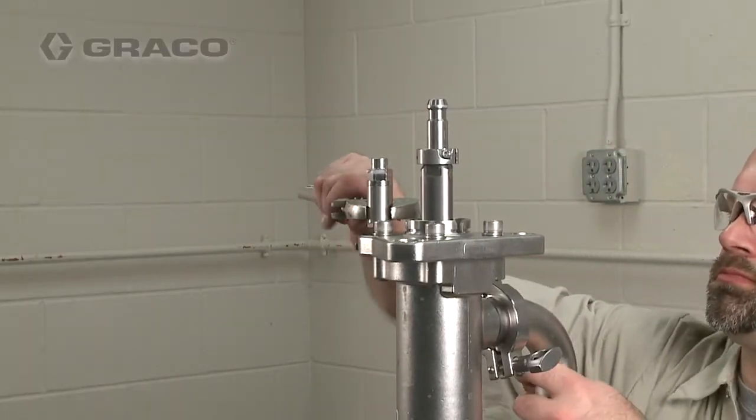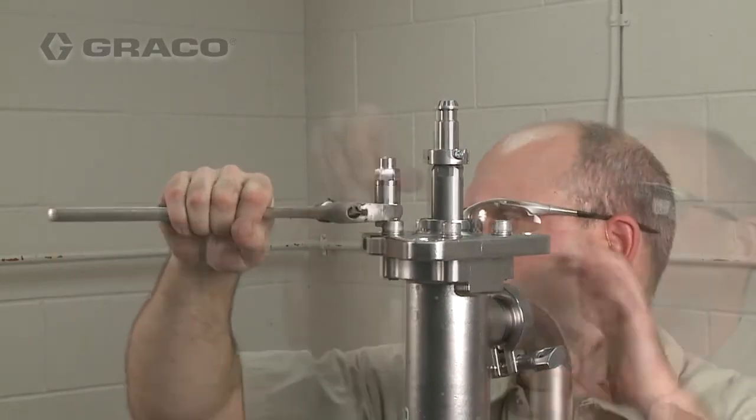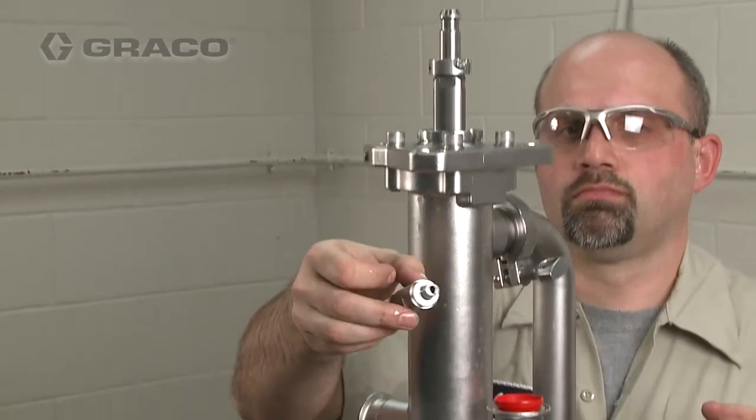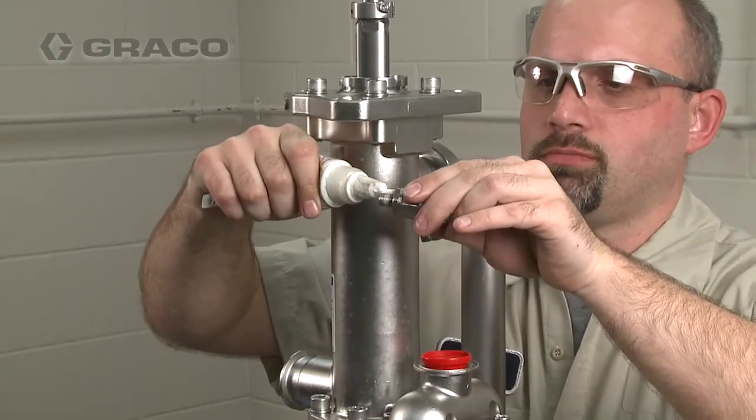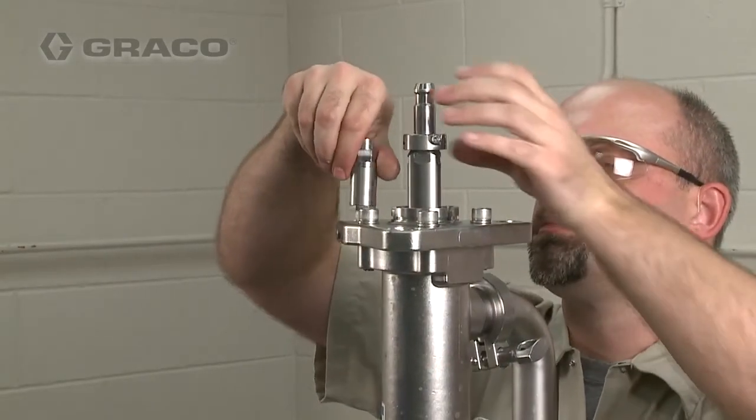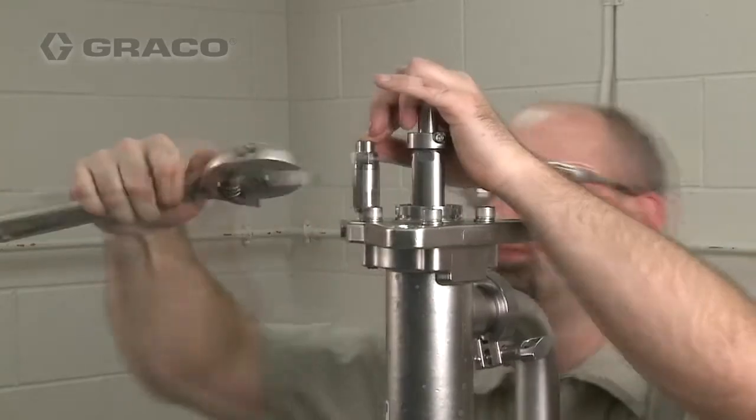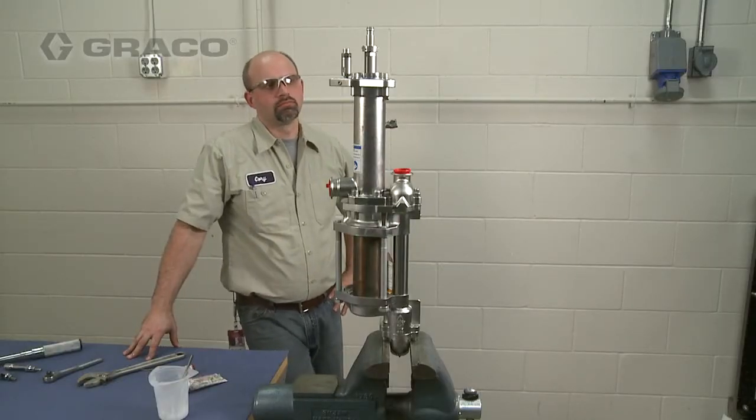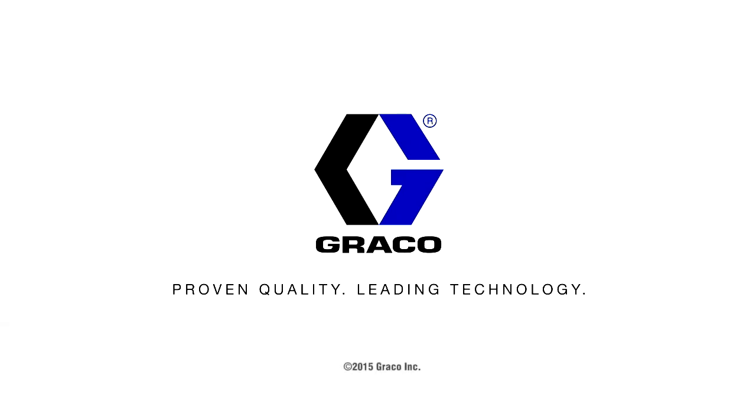If the breather valve is still installed, remove and inspect. If necessary, replace the breather valve. Apply thread sealant and install the breather valve. The valve must be installed so that it remains vertical.